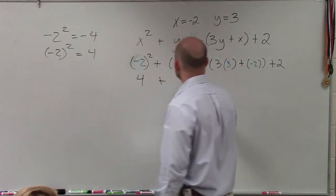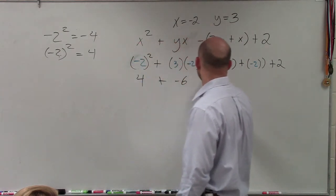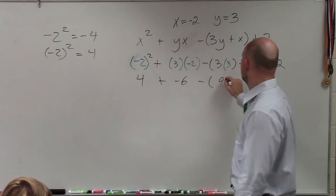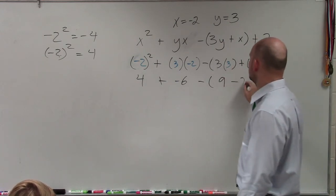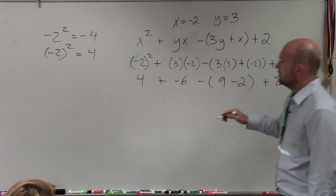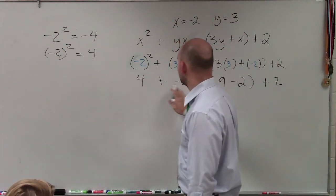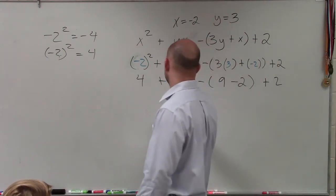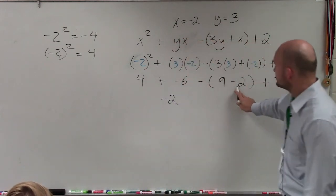3 times negative 2 is negative 6. Minus the quantity 3 times 3, which is 9, plus negative 2, plus 2. So, 4 plus negative 6 is negative 2, and 9 plus negative 2 is 7.